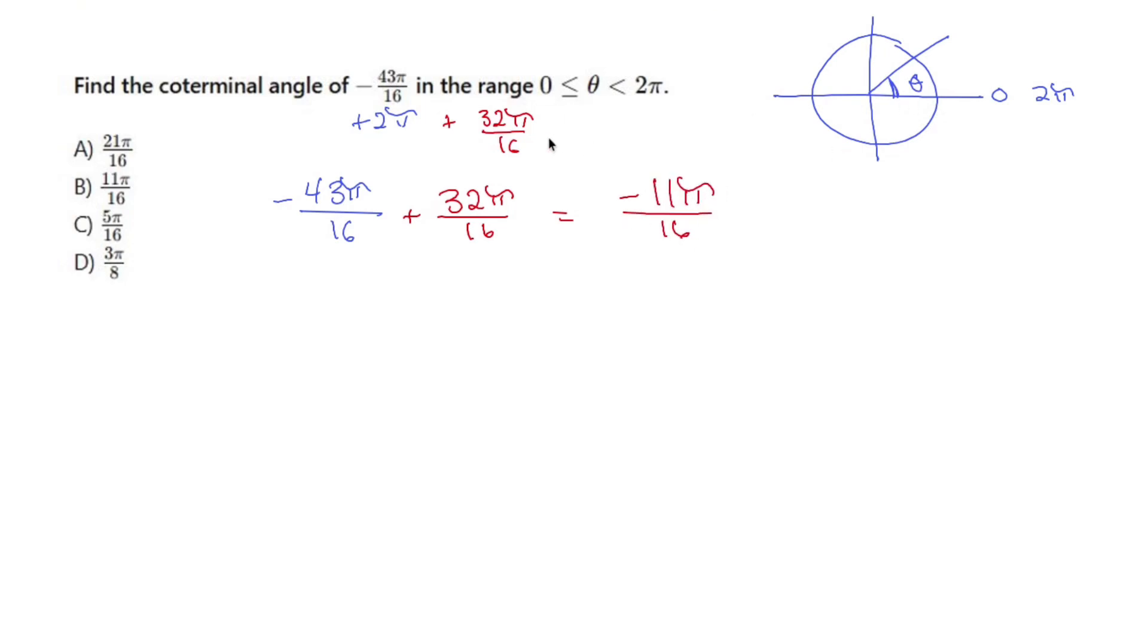Now, I'm not in that sweet spot yet between 0 and 2 pi, so I keep repeating it until I land in that sweet spot. So let's add 32 pi over 16 again, and that's going to give me 21 pi over 16.